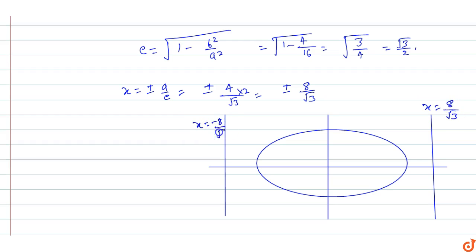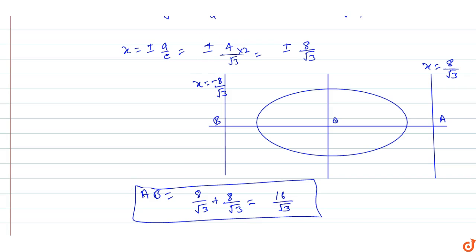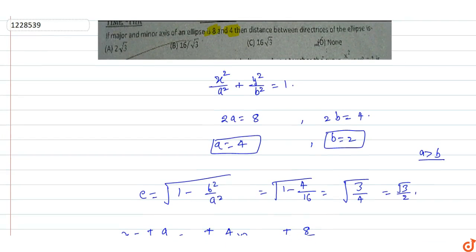So x = +8/√3 and x = −8/√3. The total distance between the two directrices is OA + OB = 8/√3 + 8/√3 = 16/√3. The distance between the directrices of the ellipse is 16/√3.